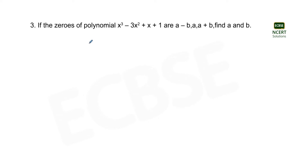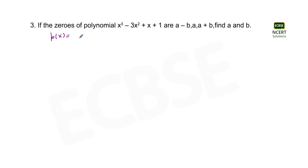Hello students, here we are with question 3 of the chapter on polynomials. The question is: if the zeros of the polynomial x³ - 3x² + x + 1 are a minus b, a, and a plus b, find a and b. The polynomial given is p(x) = x³ - 3x² + x + 1.